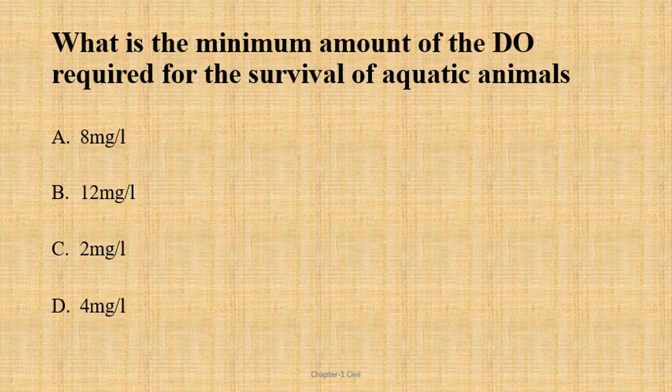The question is: what is the minimum amount of dissolved oxygen required for the survival of aquatic animals? The minimum amount for aquatic animals is 4 ppm. The answer is 4 mg per liter, option D.